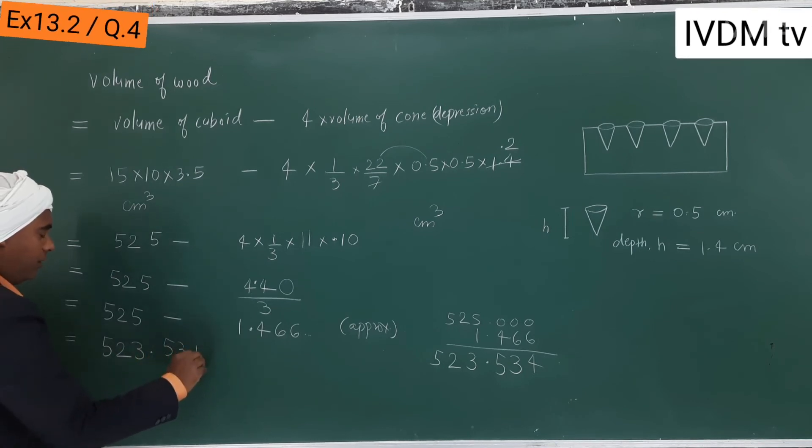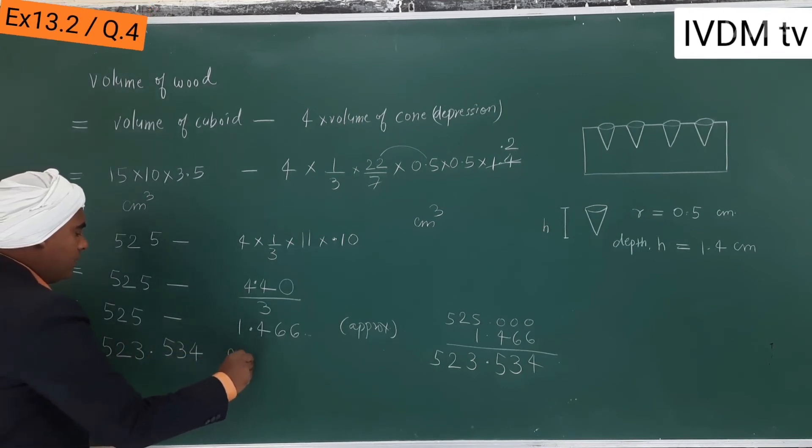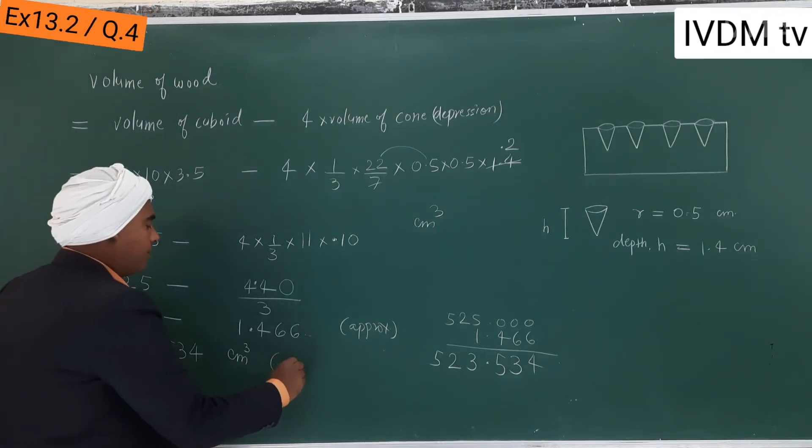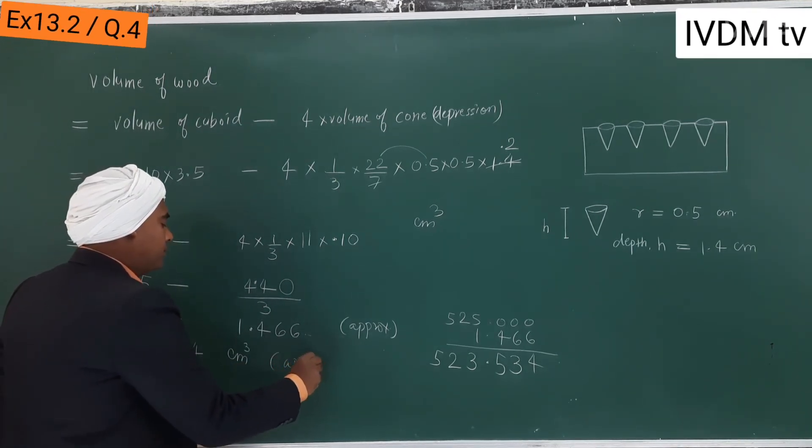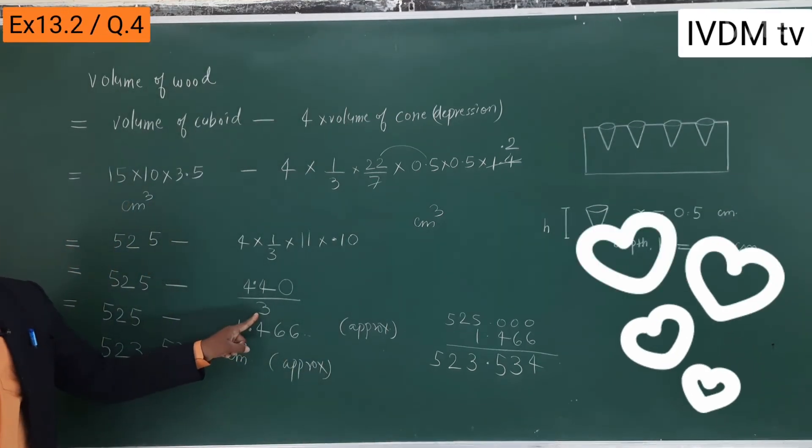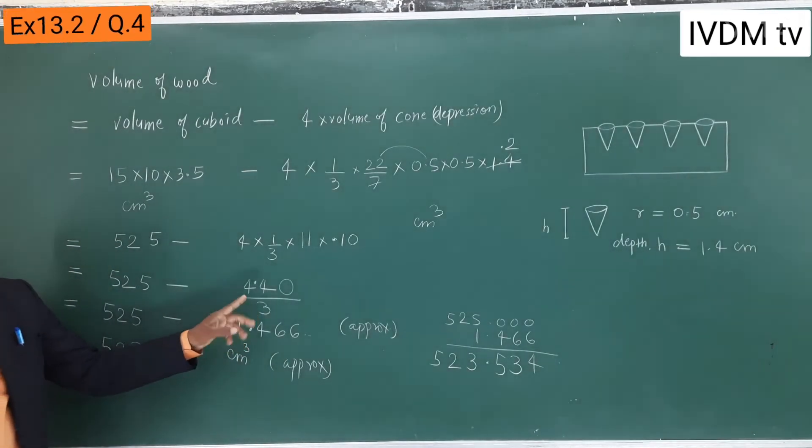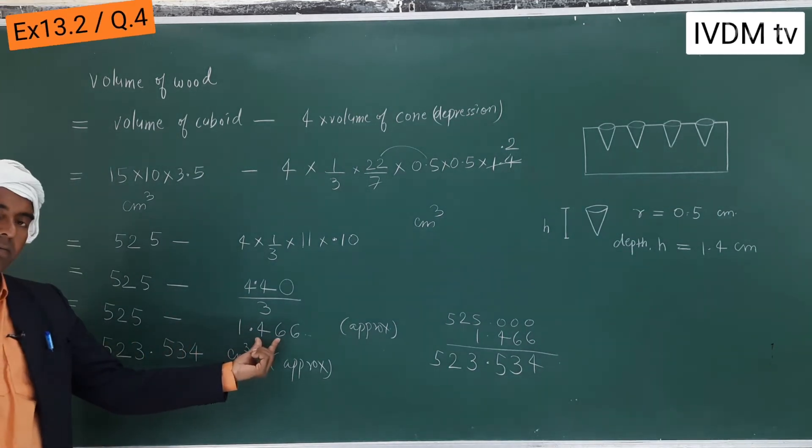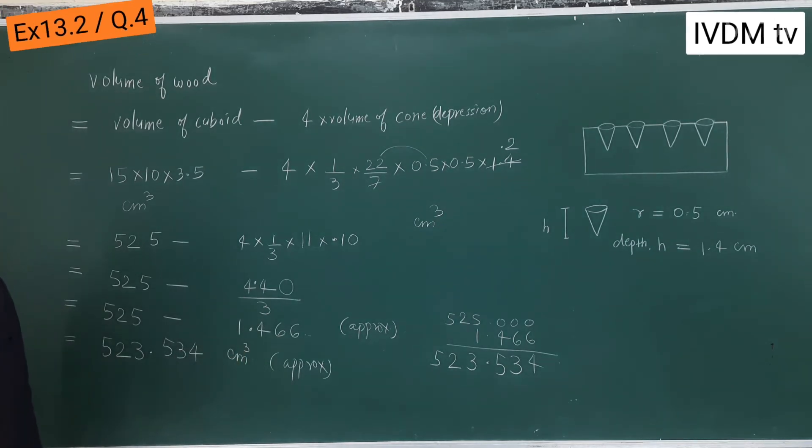523.534, this is approximately. Here even if you get divided by three, you know this division will not end, so this is approximate. So this is the answer.